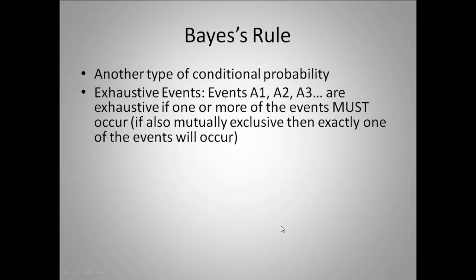When we deal with Bayes' Rule, it's just another type of conditional probability. What it is, is it's kind of a reasoning backwards. So we know that some event occurred, and we're going to try to reason backwards and figure out what's the probability that this happened in the beginning. We're going to be using those exhaustive events A1, A2, and A3. One of them must occur, and if they're mutually exclusive, only one of them will occur — that's what we're going to be using with Bayes' Rule.